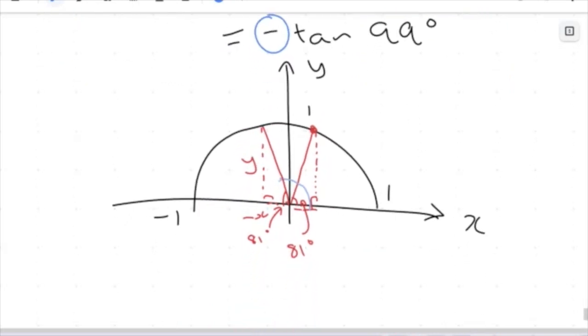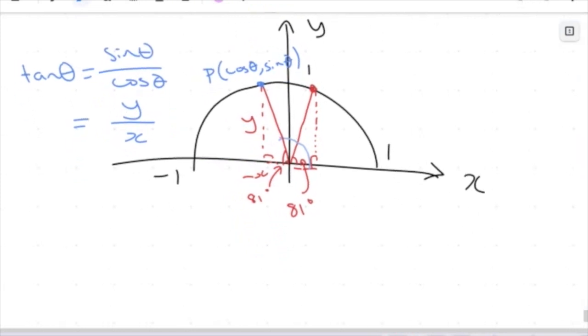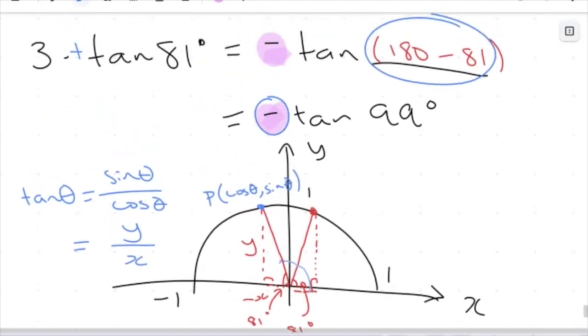So my tan theta is going to be my sin theta over my cos theta. Or in other words, it's going to be y over x. Because remember, my cos theta is x, my sin theta is y, and I'm in the second quadrant. So my x value for my ratio is going to be negative. That's why we get this negative thing happening when we start going into the second quadrant. Once we get out of this portion here that we're used to dealing with.